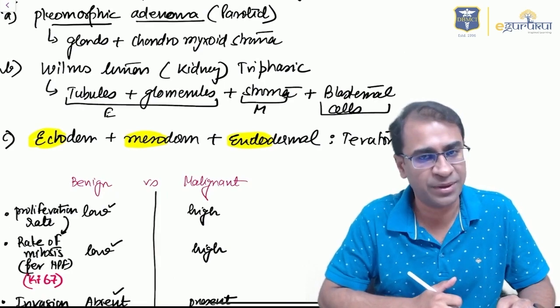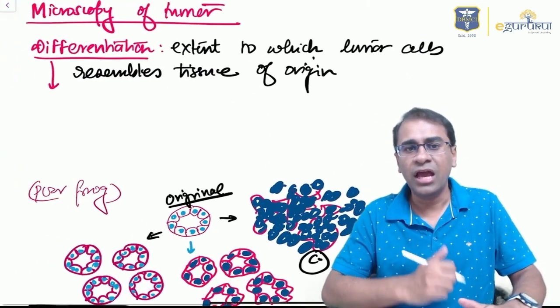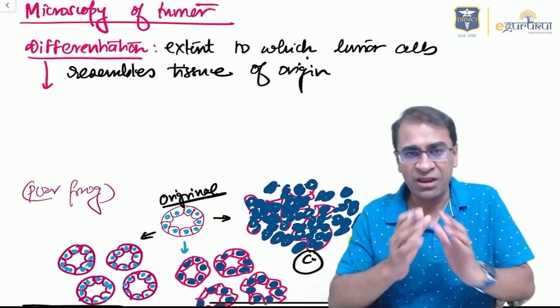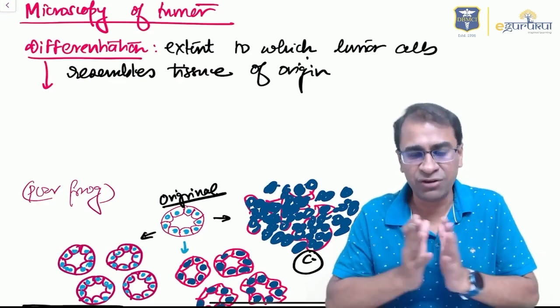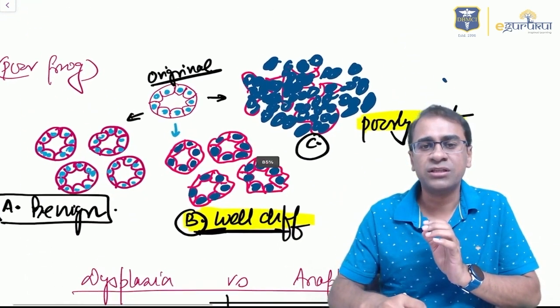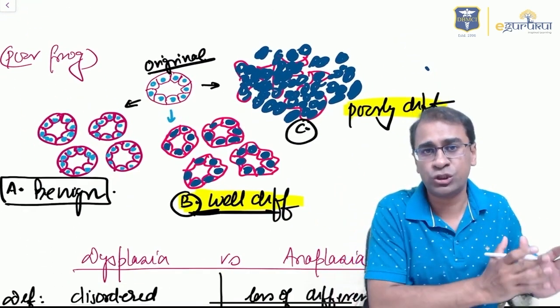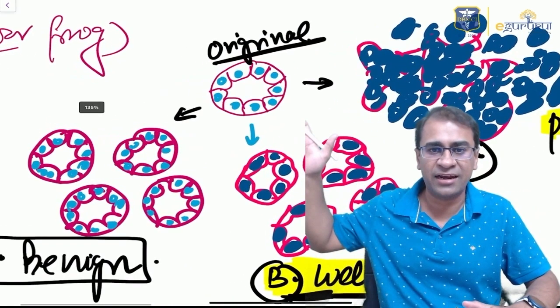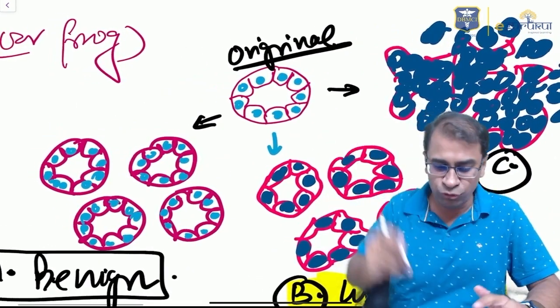What do you see in microscopy? A very important term is differentiation. Differentiation refers to how much the tissue is looking like the tissue of origin. If you look at this gland, it's a normal gland.